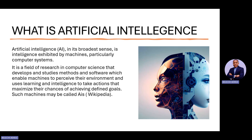When you say something is intelligent, you mean it has the ability to make very key decisions in a way that is objective. It is a field of research in computer science that develops methods and software which enables machines to perceive the environment and use learning and intelligence to take actions that maximize their chances of achieving defined goals. These are very, very important touch points.